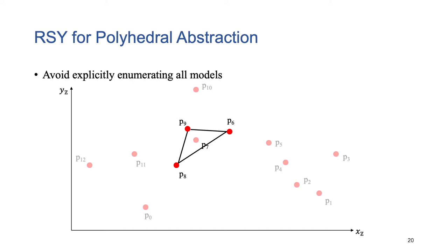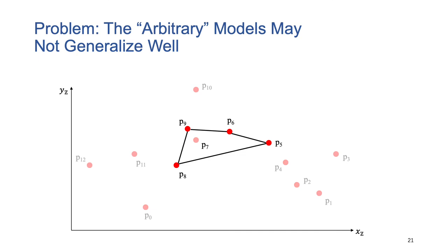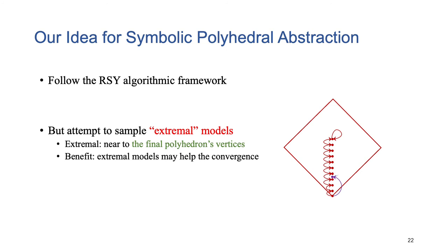Next, we need to sample a new model, which could be P5. We then compute a new intermediate polyhedron, which can only cover five models. Proceeding like this, the RSY algorithm may take a long time to stop. Essentially, RSY samples an arbitrary model that is not covered by the current abstraction. However, the new model may not help much in covering additional models.